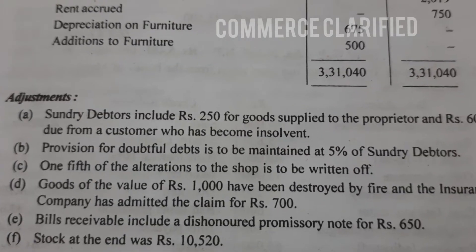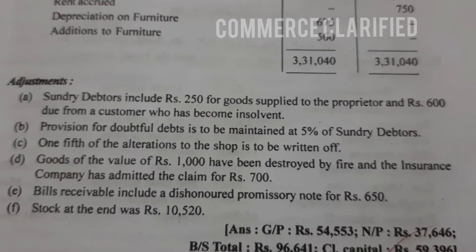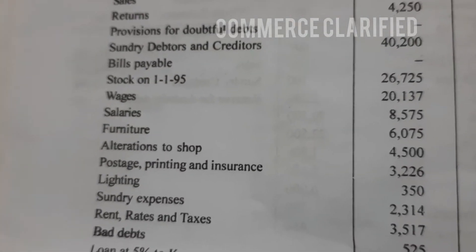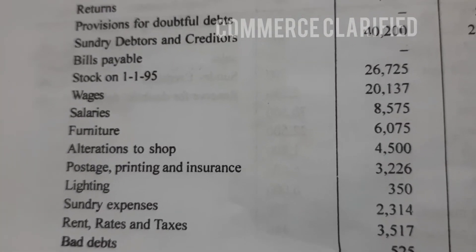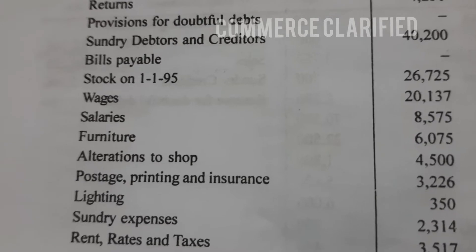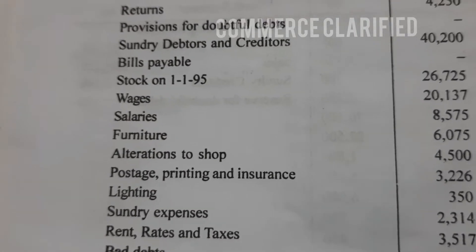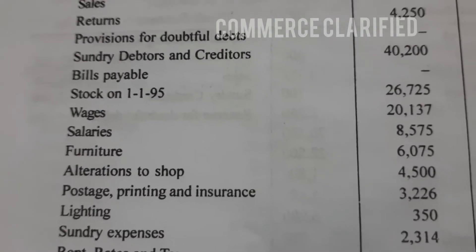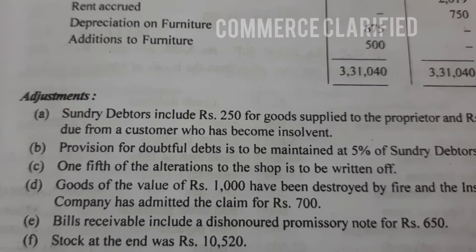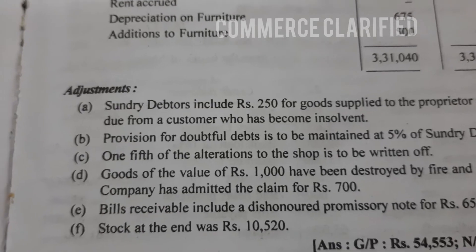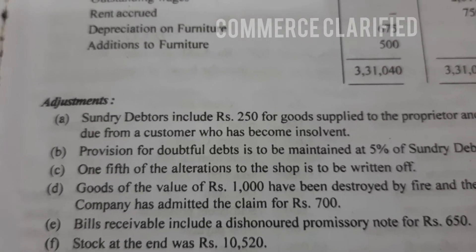A provision of 5% is to be written off. Alteration to the shop is to be written off — that is capital expenditure. So in the adjustments, the total alteration to the shop is written off in the P&L account, and the balance sheet records the remaining asset value.